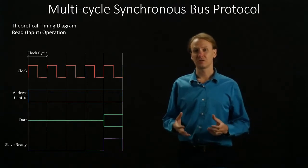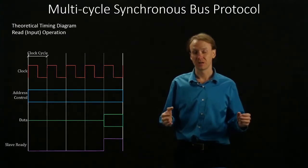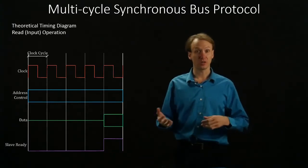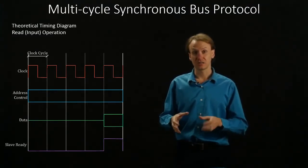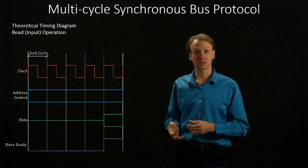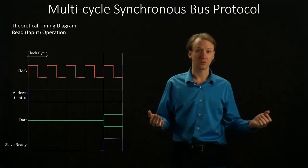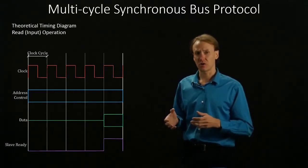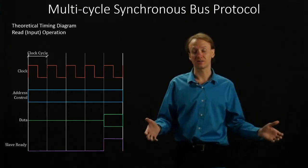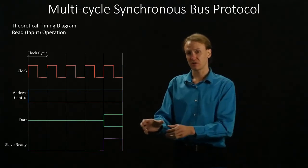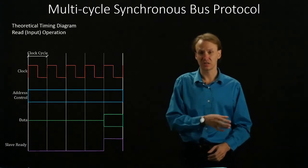So the multi-cycle synchronous bus protocol allows our operation to span several clock cycles. This means that if one device takes far longer than another device, the fast device can still respond quickly. Maybe it only takes a couple clock cycles, or the slow device can take 10 or 20 clock cycles. In the single cycle synchronous bus protocol, we would have had to adapt our clock cycle to handle that really long request. But in the multi-cycle protocol, we can set our clock cycle to be the smallest possible element, and then each device can just take as many clock cycles as it needs.